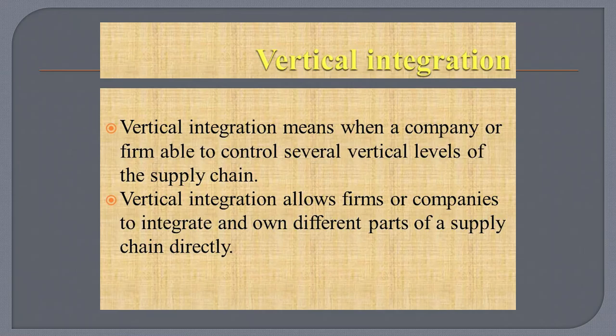The second concept is vertical integration. Vertical integration means when a company or firm is able to control several vertical levels of the supply chain. Vertical integration allows firms or companies to integrate and own different parts of a supply chain directly. We can understand vertical integration through an example like the oil and gas industries — oil companies owning and operating their own refineries and distribution networks to reduce dependence on external suppliers.